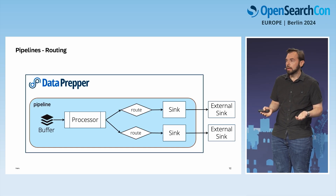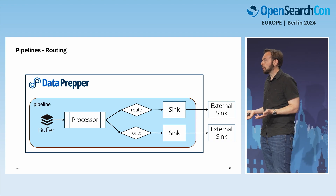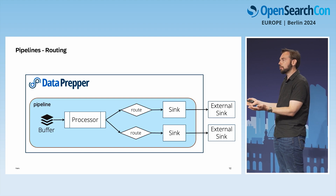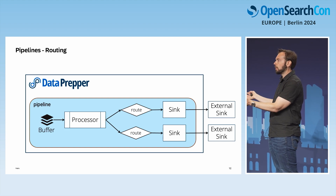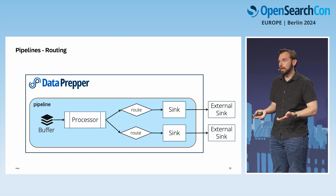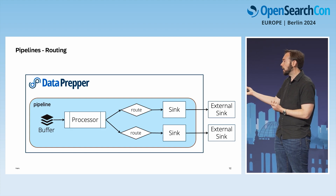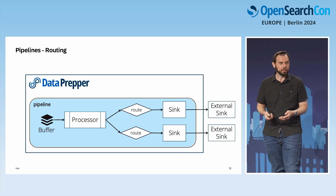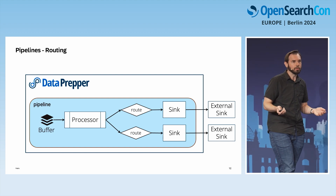DataPrepper supports routing data conditionally. By default, if you define multiple sinks, all events are sent to all sinks. But you can also create conditions so that some data goes to one sink and other data goes to another set of sinks — it's all up to how you define your pipeline.